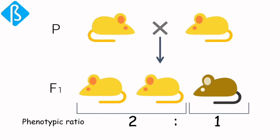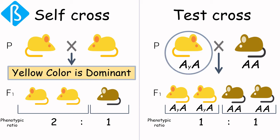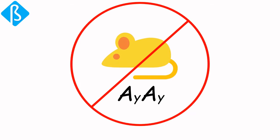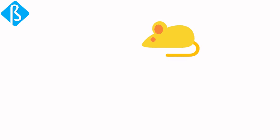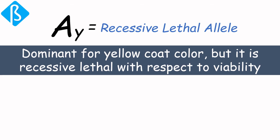He observed two yellow mice for every one brown mouse, determining that yellow coat color was the dominant phenotypic trait. Using test crosses, he showed that all yellow mice were heterozygous. However, from many crosses, he never produced a single homozygous yellow mouse. The explanation is that an individual with both dominant alleles dies during early embryonic development — this kind of allele is called a recessive lethal allele. Allele Ay is dominant for yellow coat color but recessive lethal with respect to viability.